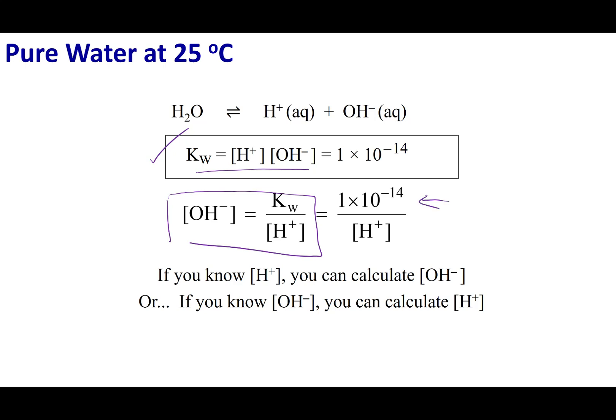And at 25 degrees, KW is a constant 1 times 10 to the negative 14. So if I know my H plus concentration, I can figure out my OH minus concentration. And I can work it backwards. If I know my OH minus concentration, I know my H plus concentration.